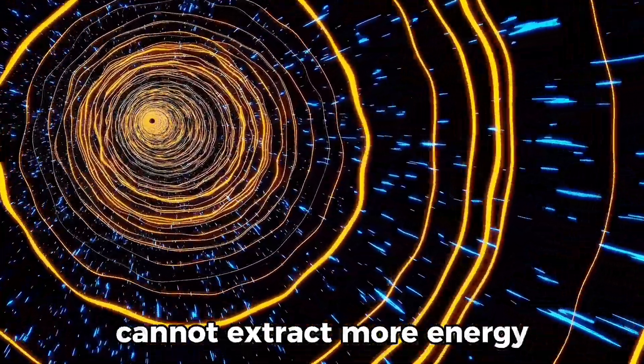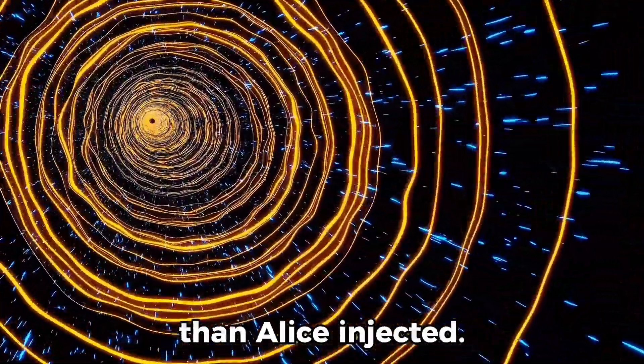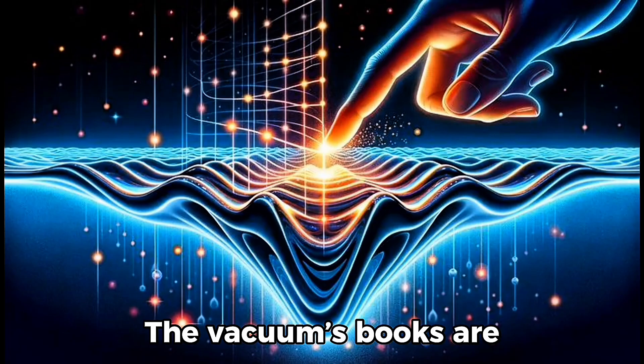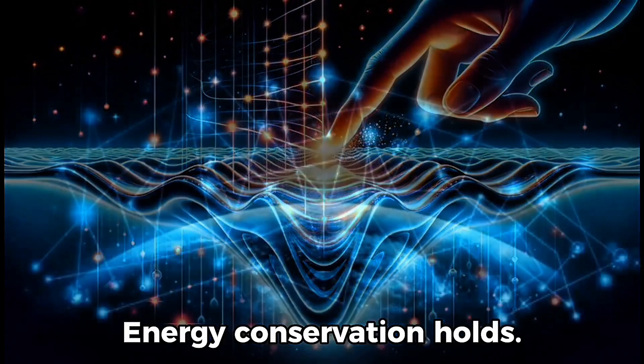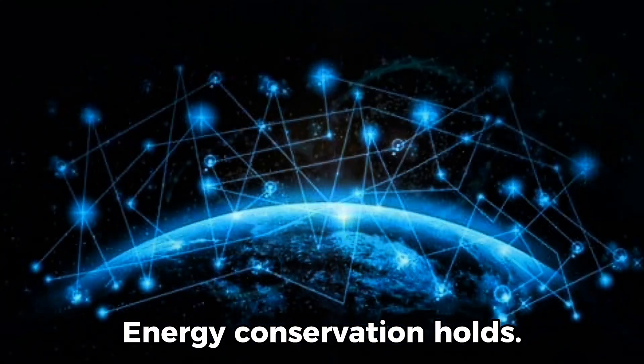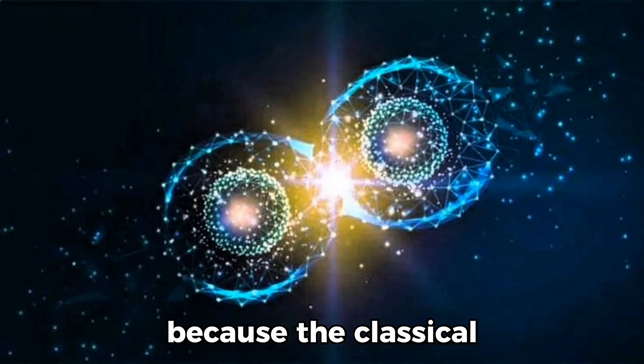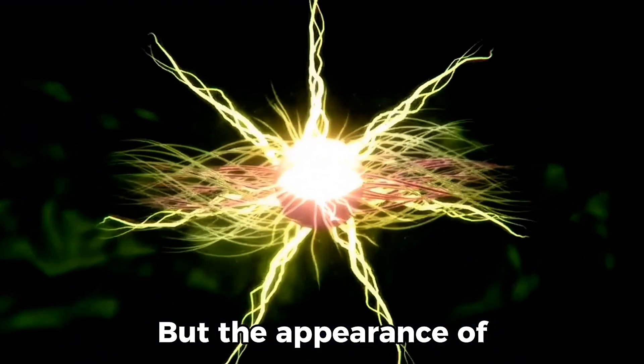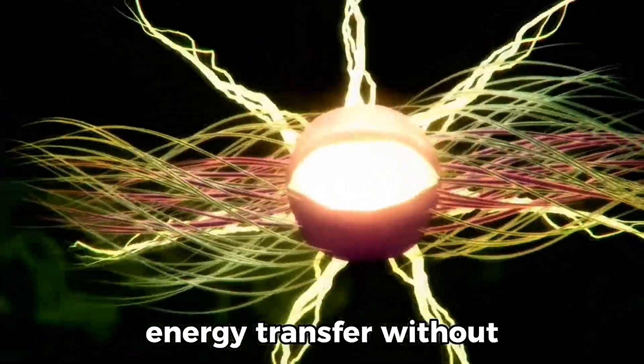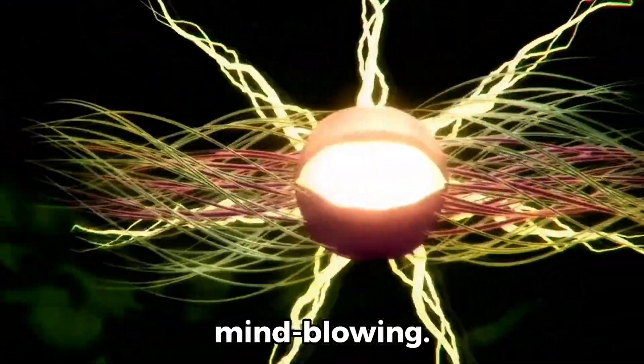But, and this is key, Bob cannot extract more energy than Alice injected. The vacuum's books are always balanced. Energy conservation holds. So does relativity, because the classical message still travels at light speed or slower. But the appearance of energy transfer without travel is nevertheless mind-blowing.